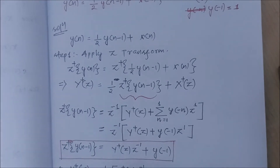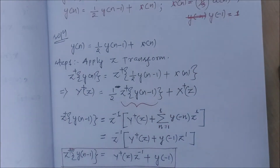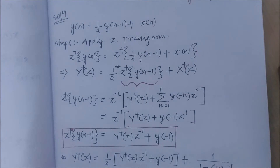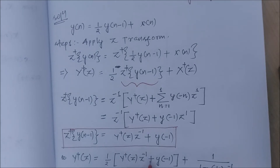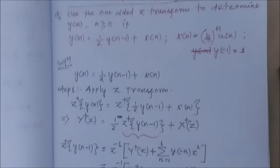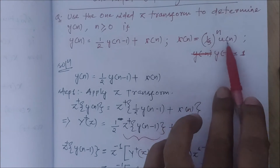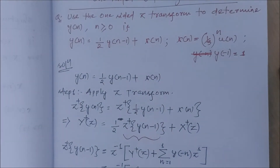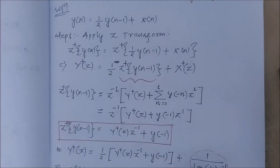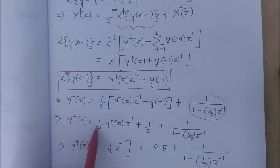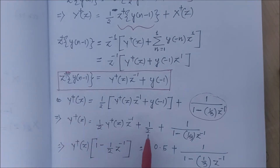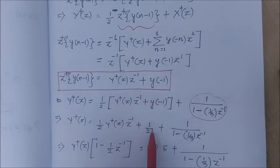Now y(-1) can be substituted from the initial condition: y(-1) = 1. So Y(z) = (1/2)[Y(z)·z^(-1) + y(-1)] + X(z), which becomes Y(z) = (1/2)·Y(z)·z^(-1) + (1/2)·1 + 1/(1 - (1/3)z^(-1)). The Z-transform of x(n) = (1/3)^n u(n) is 1/(1 - (1/3)z^(-1)).